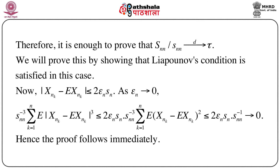So initially we are trying to prove that S_{nn}/s_n → τ in distribution. We have shown that s_{nn}/s_n → 1 as n → ∞. So naturally it is enough to show that S_{nn}/s_{nn} → τ in distribution. Since we know Lyapunov's CLT, we will just show that Lyapunov's condition is satisfied in this case and then apply Lyapunov's CLT directly.